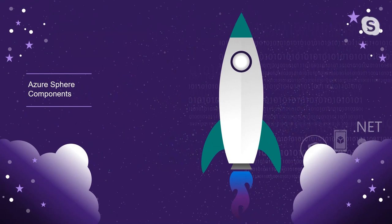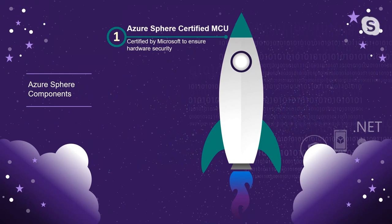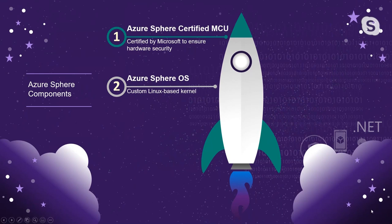There are three main components to Azure Sphere. The first is the hardware. Microsoft will only certify MCUs that adhere to a strict security model. The second aspect is the Azure Sphere OS, which is a greatly pared-down version of Linux — a custom kernel reduced to minimize the threat surface of the device. You won't be interacting with this OS directly; there is no shell. The kernel runs in supervisor mode and is responsible for all onboard drivers for things like Wi-Fi, UART, SPI, I2C, and GPIO.